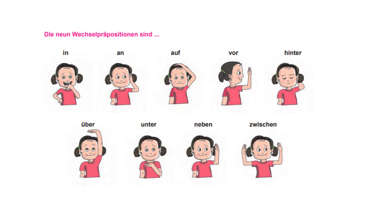Dann haben wir vor — vor means 'in front'. Hinter means 'behind'. Then we have über — über means 'over', where there is a gap between two objects. Dann kommt unter — unter means 'below', when you put something below something. Neben means 'near' or 'nearby'. And zwischen means 'in between' — zwischen shows in between.